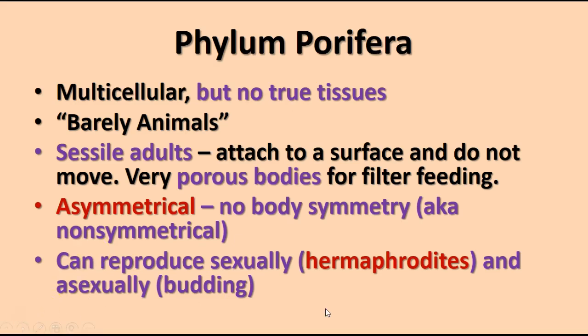Sponges are asymmetrical — they don't have any body symmetry. If you cut them in half, the two halves don't look like each other. Our bodies, by contrast, are bilaterally symmetrical: if you cut us in half from head to toe, we have more or less mirror image sides — left and right — with basically the same parts: two eyes, two ears, two arms, two legs, etc. Sponges don't exhibit any kind of symmetry, so they are asymmetrical.